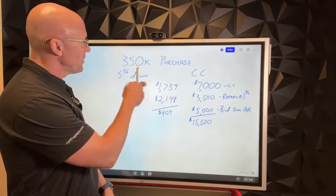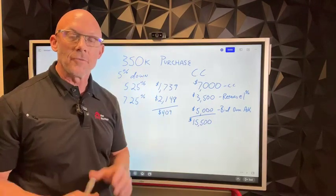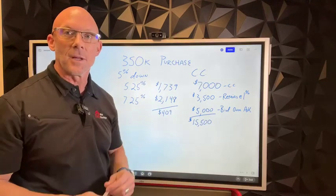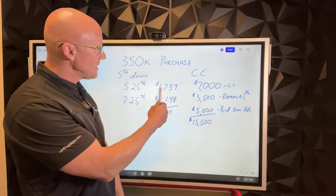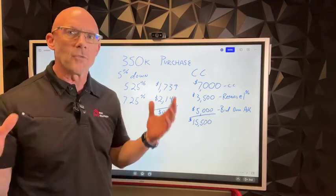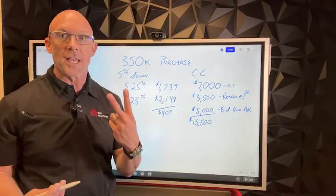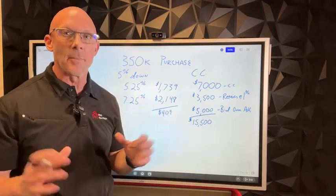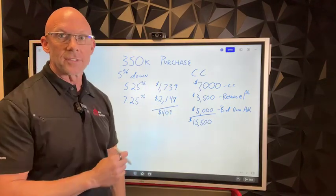So with a $350,000 purchase price putting five percent down, if we go back in time five, six months ago, rates were around five and a quarter, payment $1,739. And then you look right now, rates are up and let's just take a seven and a quarter. So two percent higher, I know it seems like a lot, but let's do the math. That's a $400 difference. It's a lot of money.